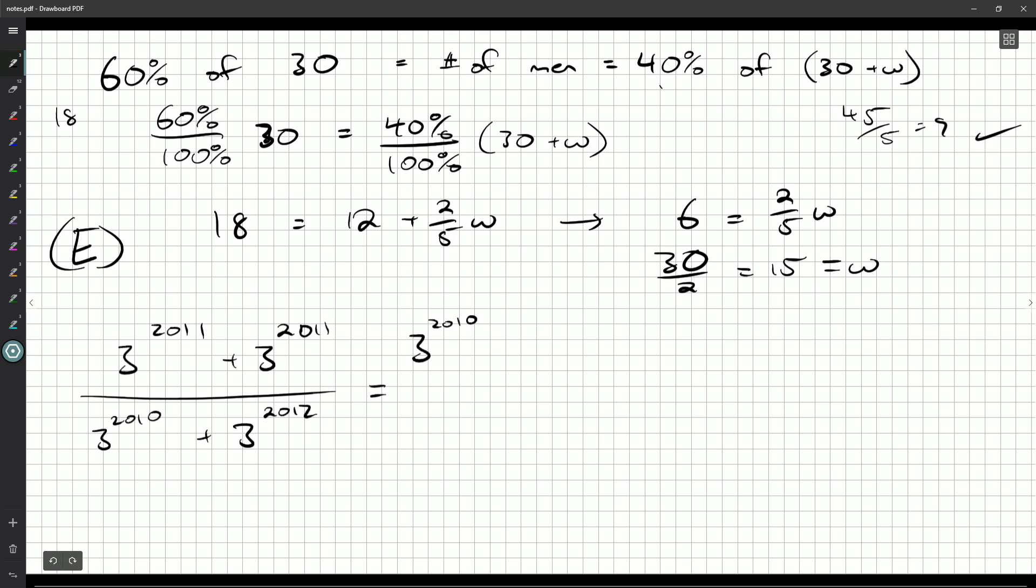So 3 to the 2010, then the 2011 just becomes a 3 to the 1. And on the bottom, well, we factor a 3 to the 2010 completely out of this part, so we're left with 1 plus. If I factor out a 2010, we subtract by 2010, so from 2012 we'll be left with 3 squared.